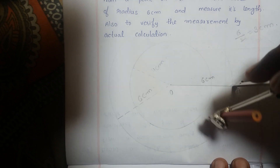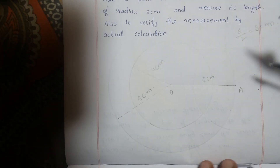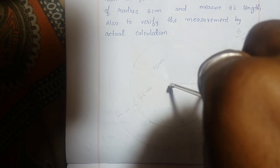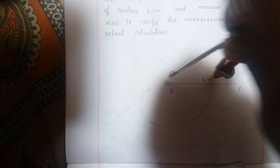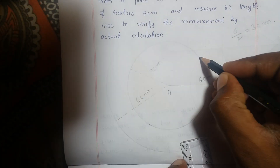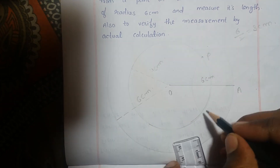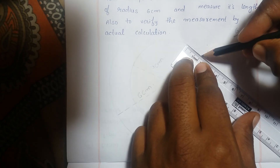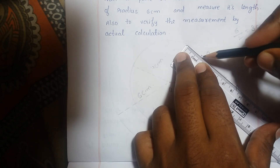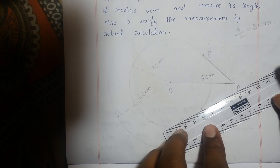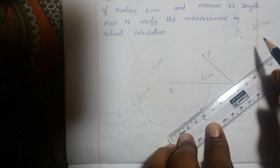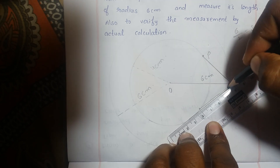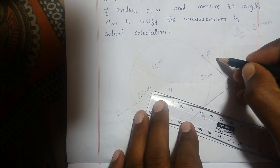Put the compass needle at O and draw one more arc. The intersection points are P and Q. Join P and Q. We will get the required tangents to the circle.